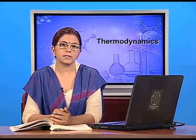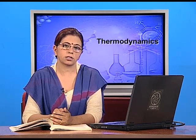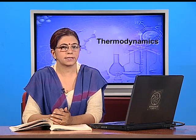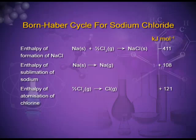Let me explain the lattice enthalpy of NaCl using the Born-Haber cycle. Sodium, Na, is a metal and it is in the solid state, so it has to be changed into the gaseous state. Chlorine is already in the gaseous state. The enthalpy of formation of NaCl: Na in the solid state plus half Cl₂ in the gaseous state gives NaCl in the solid state. Overall, it is an exothermic process. There are many individual steps which take place before the formation of NaCl.